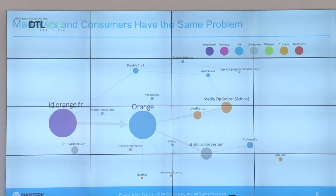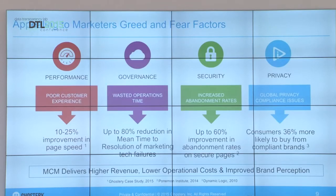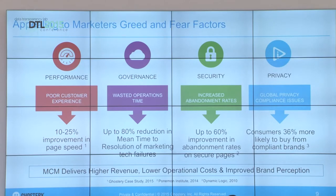Regular people don't understand all this tracking — and the company that owns the web page doesn't understand it either. That's where the opportunity lies, because companies actually have the same incentives. Appealing to greed and fear is really how you make money. When the web is slow, it's a bad customer experience. Your operations folks waste a lot of time running down problems in this messed-up ecosystem, and every node of all these different companies is another security vulnerability. And then the regulators come in because you need to be compliant.